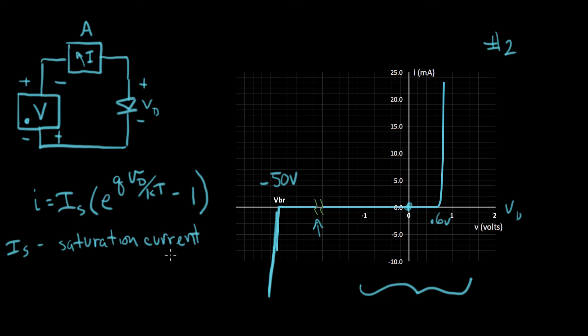For silicon, that's a value of about 10 to the minus 12 amperes, which is one picoampere. That's how much IS is. Q is the charge on an electron, and that equals 1.602 times 10 to the minus 19 coulombs.